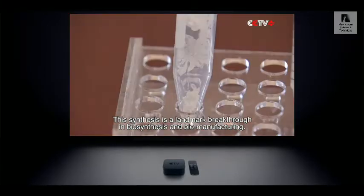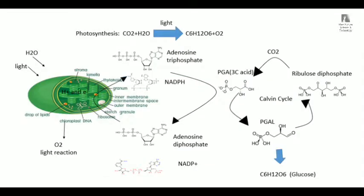Artificial starch is benchmarked against the traditional photosynthesis of starch, so we first need to understand what photosynthesis is. Photosynthesis, as learned in junior high school, is the process by which green plants absorb carbon dioxide and water and, using light energy, convert them into organic matter such as glucose, while releasing oxygen. This is a simplified explanation.